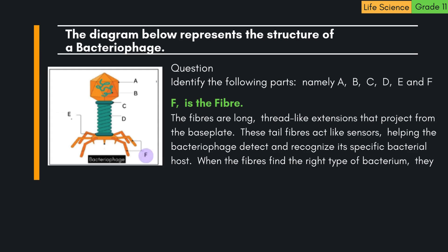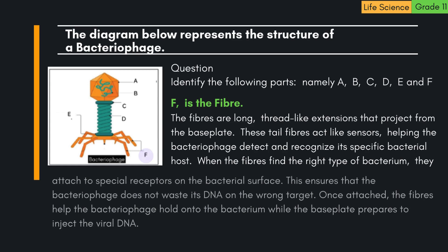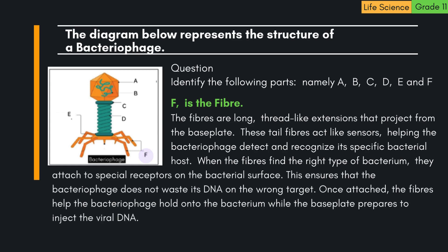F is the Fibre. The fibres are long, thread-like extensions that project from the baseplate. These tail fibres act like sensors, helping the bacteriophage detect and recognise its specific bacterial host. When the fibres find the right type of bacterium, they attach to special receptors on the bacterial surface. This ensures that the bacteriophage does not waste its DNA on the wrong target. Once attached, the fibres help the bacteriophage hold onto the bacterium while the baseplate prepares to inject the viral DNA.